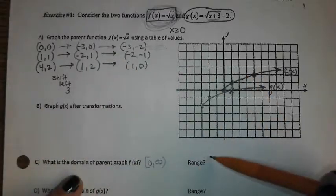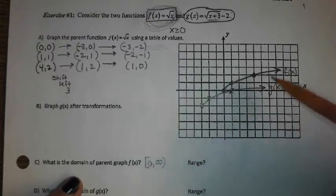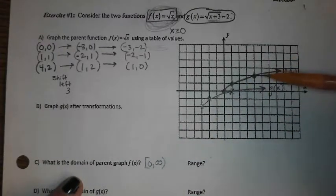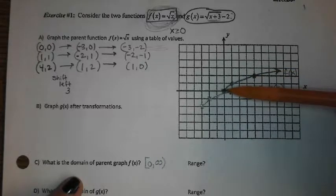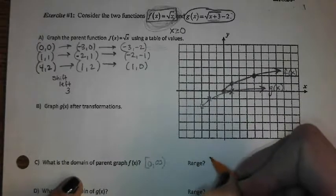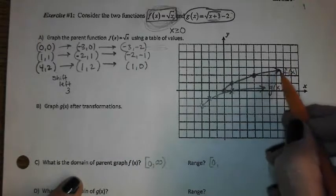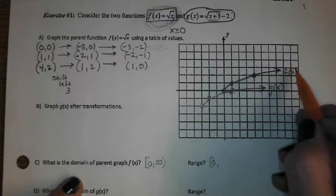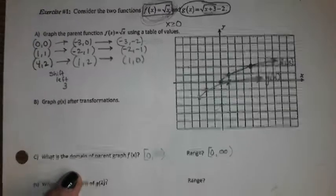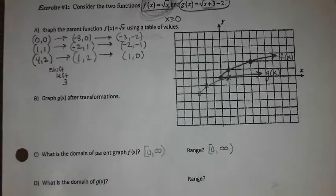The range, on the other hand — look at your graph. Range is the highest and lowest y-value. What's the lowest y-value this ever gets to? 0. And what's the maximum height it's ever going to get to? Infinity. It doesn't go up very fast, but it does continue to increase forever.